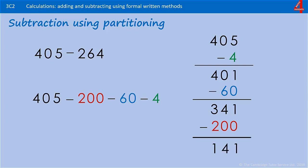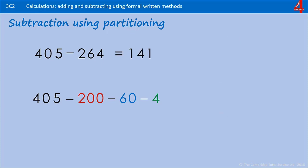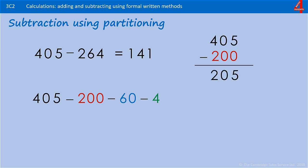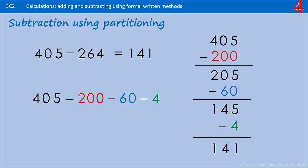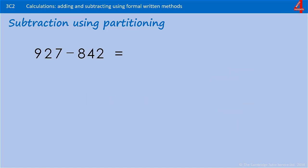And that's 141. Doing this the other way around: 405 take away 200 leaves 205. Take away 60 — if you know that 200 take away 60 is 140, then 205 take away 60 will be 145. Finally, take away the 4, and that's 141. Now, 927 take away 842 — pause the video and have a go.